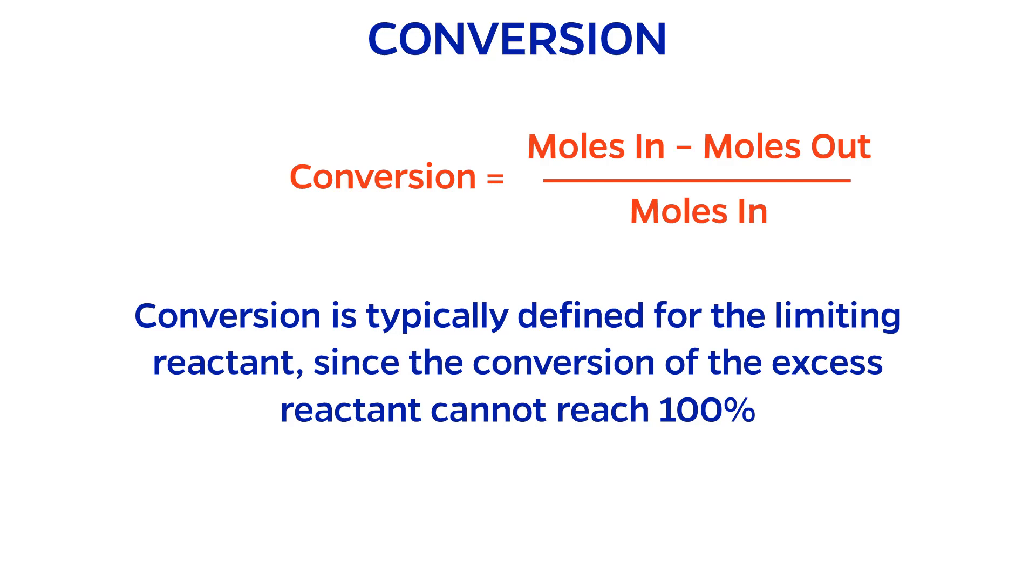Note that conversion is typically defined for the limiting reactant, but doesn't necessarily have to be. This is because it is impossible for the conversion of the excess reactant to reach 100%, because the limiting reactant would have ran out first before this happened.